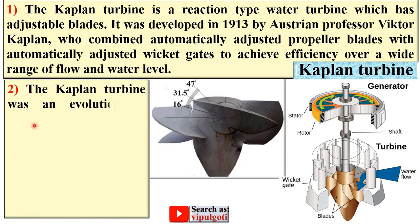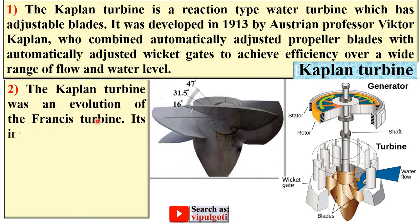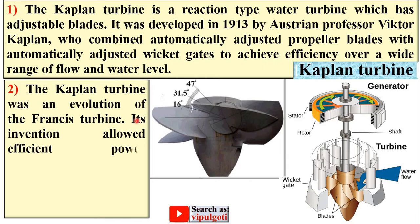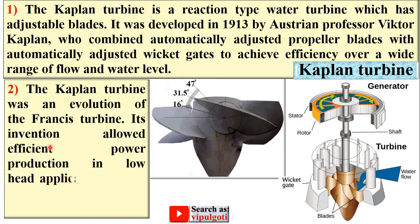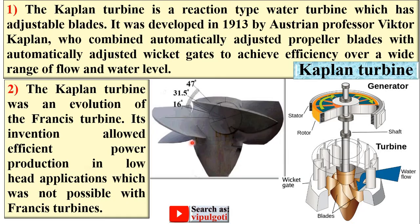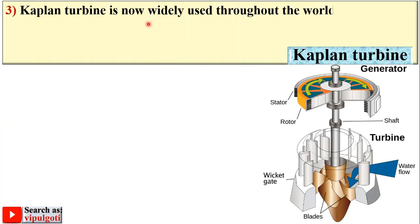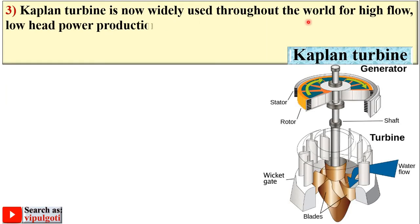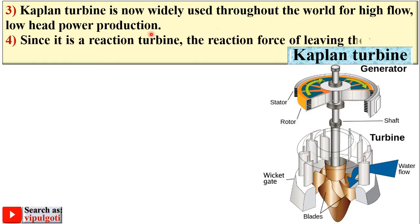The Kaplan turbine was an evolution of the Francis turbine. Its invention allowed efficient power production in low head applications, which was not possible with the Francis turbine. In short, the Kaplan turbine is the improvement of the Francis turbine, and it is now widely used throughout the world for high flow and low head power production.